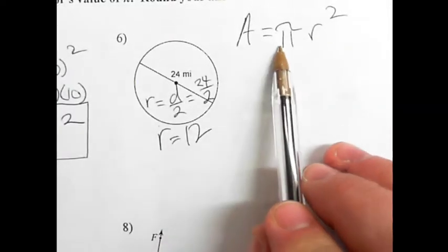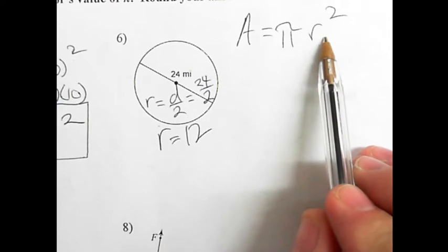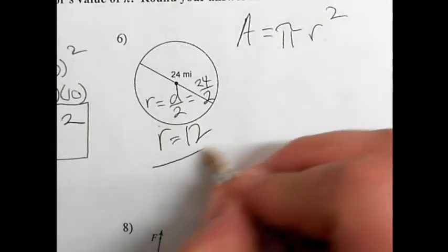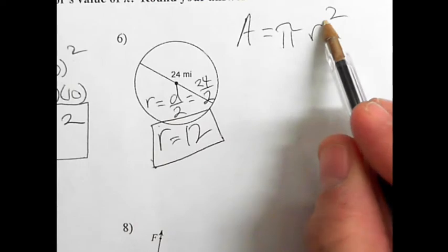Now, a lot of you guys just plugged in 24 to this formula and then showed me that the radius was 12. That was wrong. You've got to solve for the radius first, then plug r in for r.